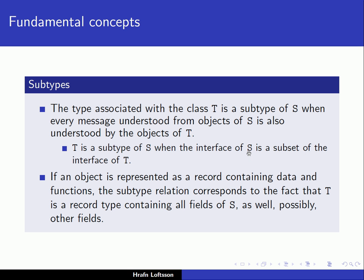Because if the interface of S is a subset of the interface of T, it means that every operation we can apply to S we can also apply to T, since the interface tells us what operations are available. We can also say that if an object is represented as a record containing data and functions — really containing the data but a pointer to the functions — then the subtype relation corresponds to the fact that T is a record type containing all fields of S, as well as possibly other fields.